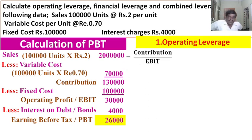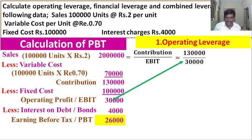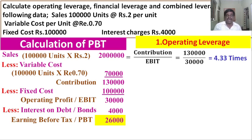What is the contribution in this problem? Already calculated — contribution is rupees 1,30,000, and EBIT is rupees 30,000. So operating leverage equals 1,30,000 divided by 30,000, which gives 4.33 times. Therefore, operating leverage is equal to 4.33 times.